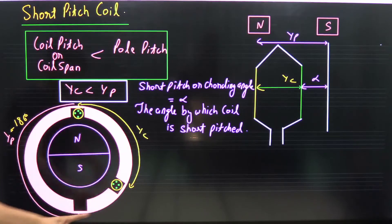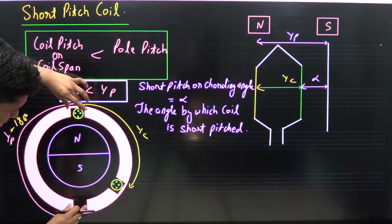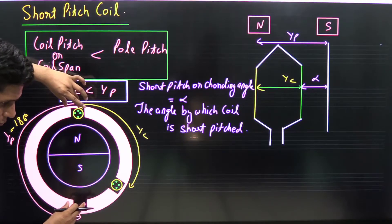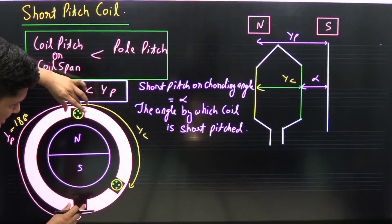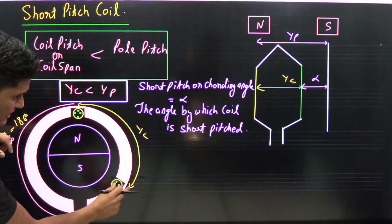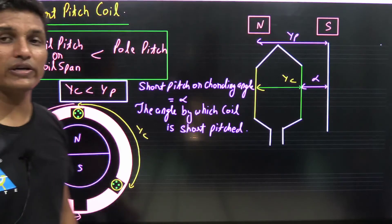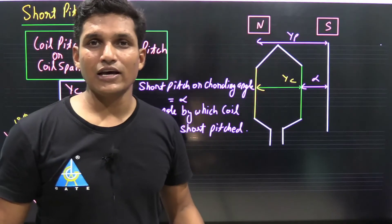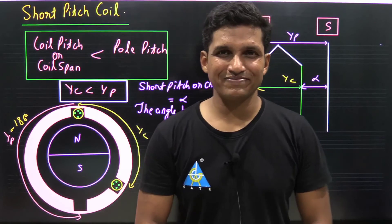In this particular example, if coil sides are placed in this slot and in this slot, then it is said to be a full pitch. But in this case, the coil side is placed in this slot and in this slot, so we can see that YC is less than YP. So it is known as a short pitch coil. Thank you so much.